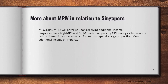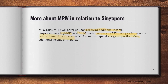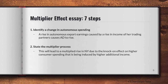In Singapore specifically, the MPW is very high because Singapore has a very high MPS and MPM. This is due to the compulsory CPF savings scheme, where a proportion of any change in income always goes to CPF to help people through retirement. MPM is also very high because of a lack of domestic resources, meaning a large proportion of additional income is spent on imports — foreign brands like Nike and Adidas — since Singapore lacks prominent domestic brands.